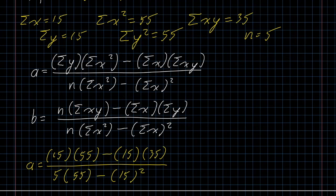This is an easier formula to work with than the formula for R. I can do the numerator all at once. 15 times 55 minus 15 times 35, my calculator tells me is 300. 5 times 55 minus 15 squared, my calculator tells me is 50. And 300 divided by 50 comes out as 6.